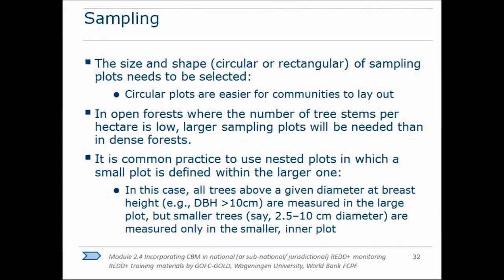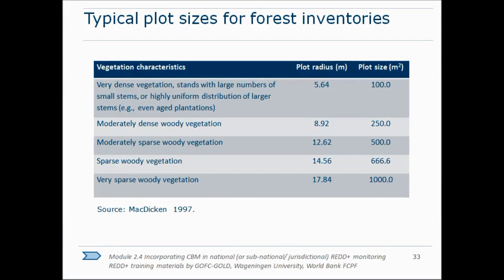Moving on to some practicalities of setting up a survey — a few tips from experience. Circular plots are much easier to use than square ones; they're easier to lay out, and communities find them easier to manage, since squares require exact right angles at corners. The size of the plot also depends on the type of forest — in a low density forest you need a bigger plot to have more trees in your sample.